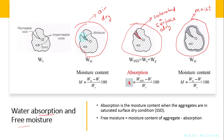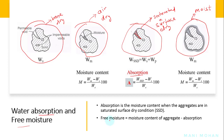If the aggregates are oven dried, all water will evaporate and this is called bone dry. Absorption is the moisture content when the aggregates are in saturated surface dry condition. Moisture content is the weight of the aggregate minus the weight of the bone dry aggregate, divided by the weight of the bone dry aggregate.